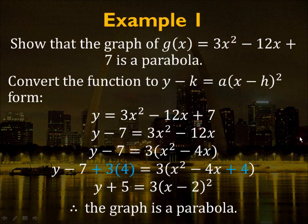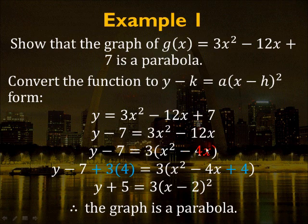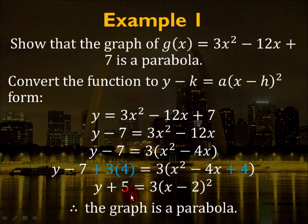To convert the function into parabola form: move the constants to the side with y, factor out any coefficient on x, and complete the square. Make sure you add the same amount to the left side. Simplify the equation and draw your conclusion.